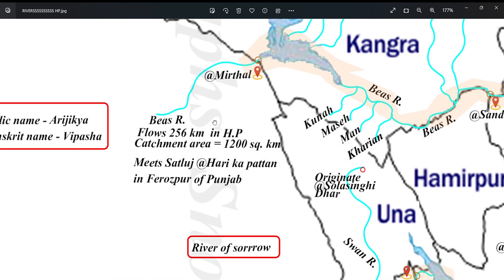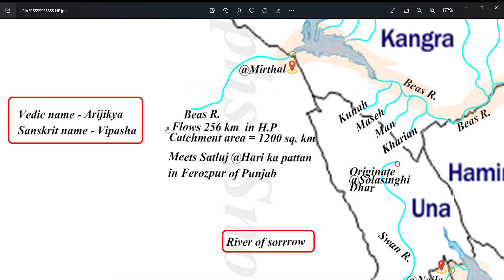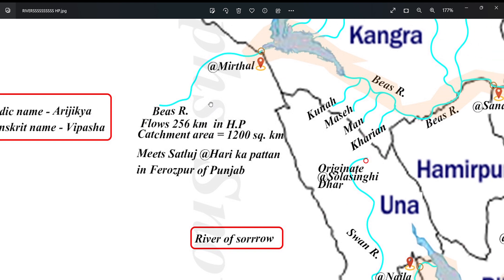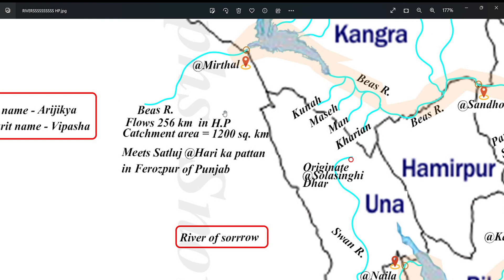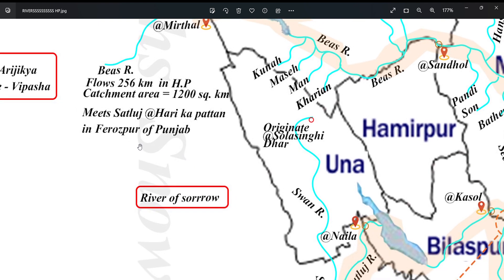Here are some quick facts about Bayas river. The Vedic name is Arijikya and the Sanskrit name is Vipasha. It flows for 256 km in Himachal Pradesh and the catchment area is 12,000 km². It meets the Satluj river at Harike Pattan in Firozpur, Punjab.